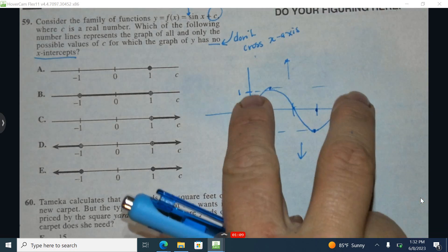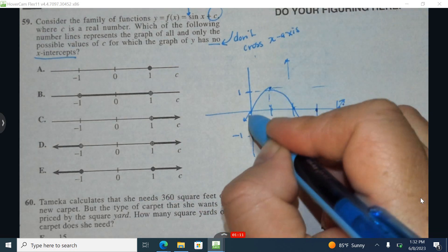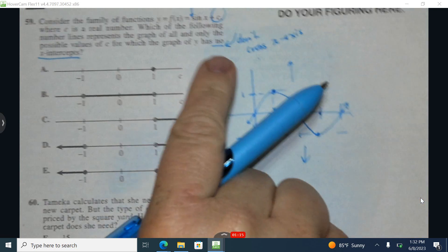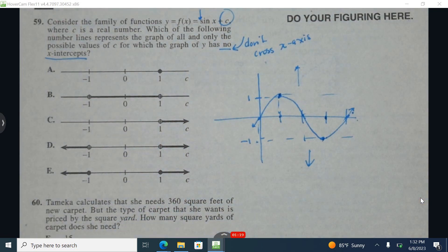And if I shifted this entire graph down 1, everything went down 1, this point would still be on the x-axis. We want no x-intercepts, so we'll have to do one of two things.